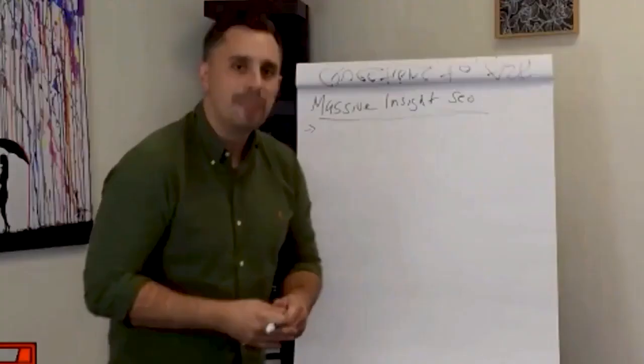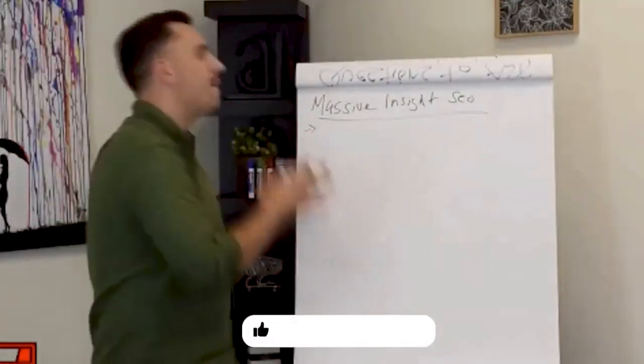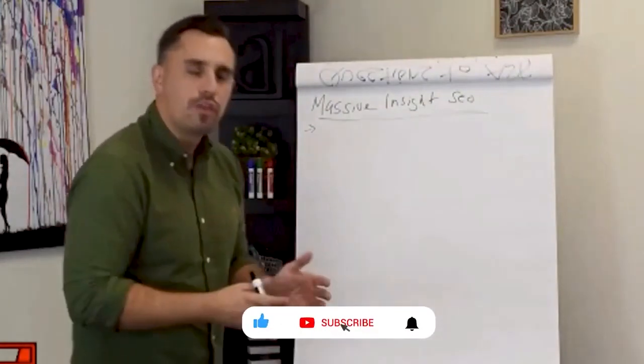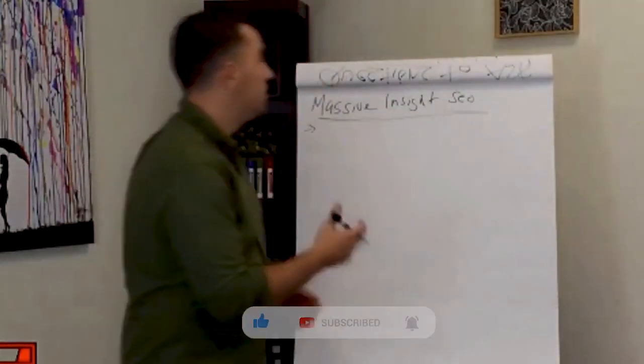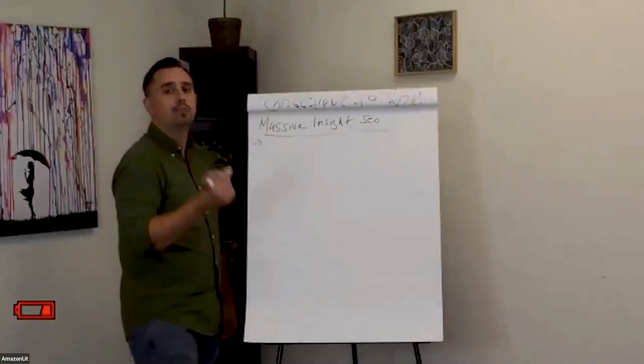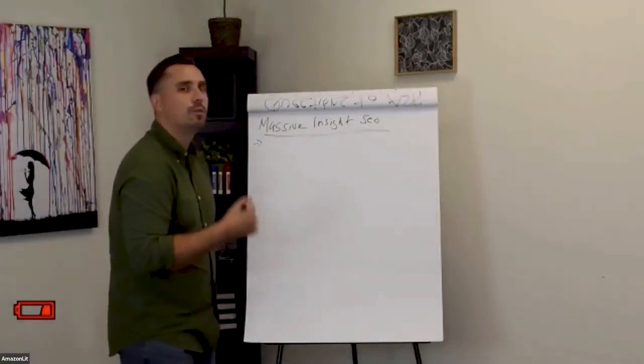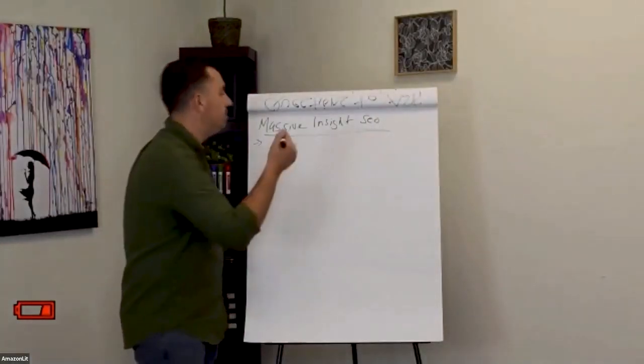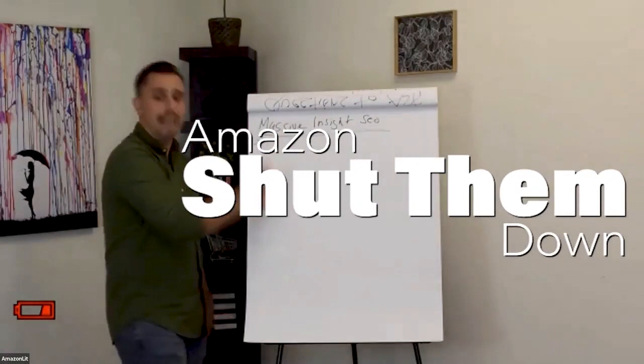Amazon told them that the buy box is algorithmic and the algorithm is what has brought Amazon to the place where they are today. It's what's best for the customer, and so it's what's best for Amazon. So essentially Amazon shut them down.